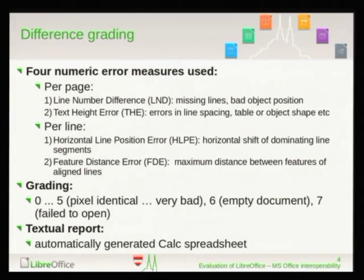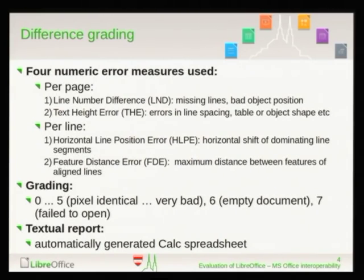So, differences. We take a document, render it in one application into PDF and in another application into PDF, and compare these results as bitmaps. We have four measures, two of them computed per page. One is number of lines of text — sometimes a line of text is missing, and I observed this a few years ago with some DOC documents not completely shown in LibreOffice. This is graded zero for perfect and five for bad. Then there is text height error — interline spacing is sometimes different in different programs, and this number in millimeters shows how good or bad that is.